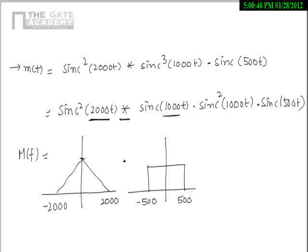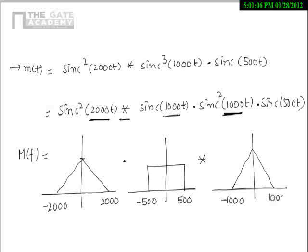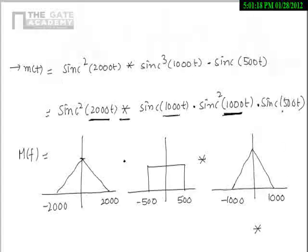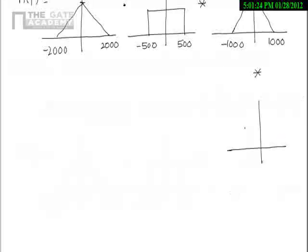Then we have multiplication, which becomes convolution in the frequency domain. Sinc squared 1000t has Fourier transform as a triangle, where 1000 is half the width, so it spans from minus 1000 to 1000. And then we have multiplication becoming convolution with sinc 500t, whose Fourier transform is a rectangle. The 500 represents the width, so it spans from minus 250 to 250.